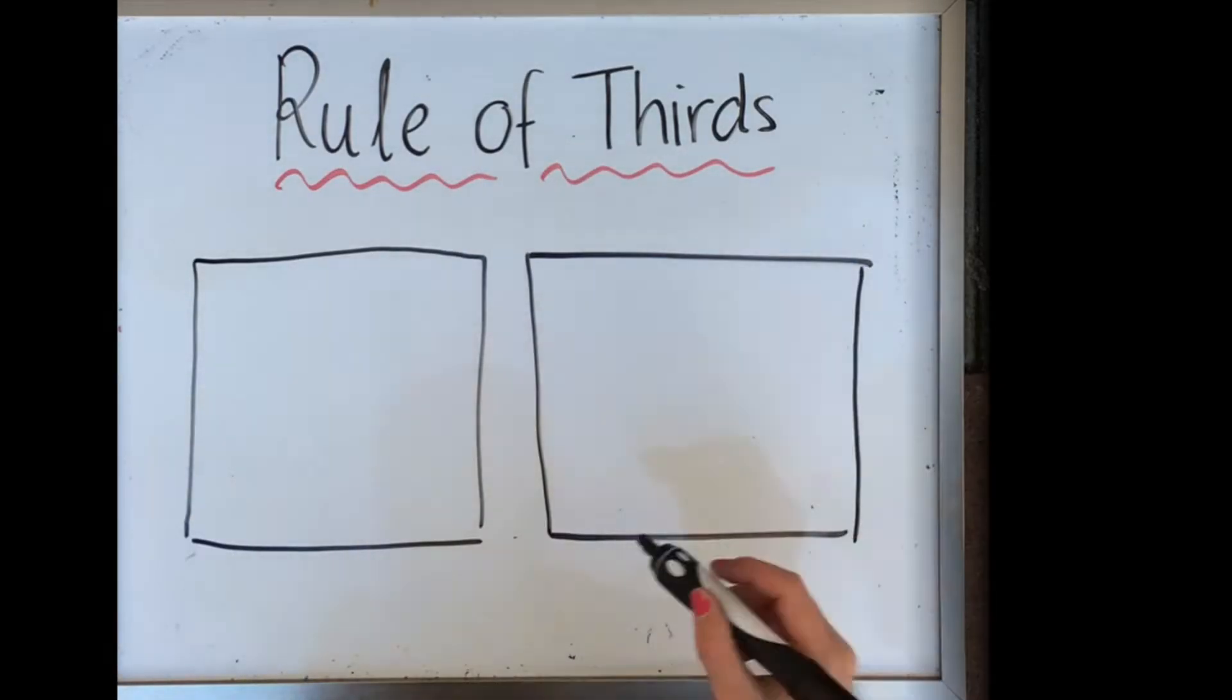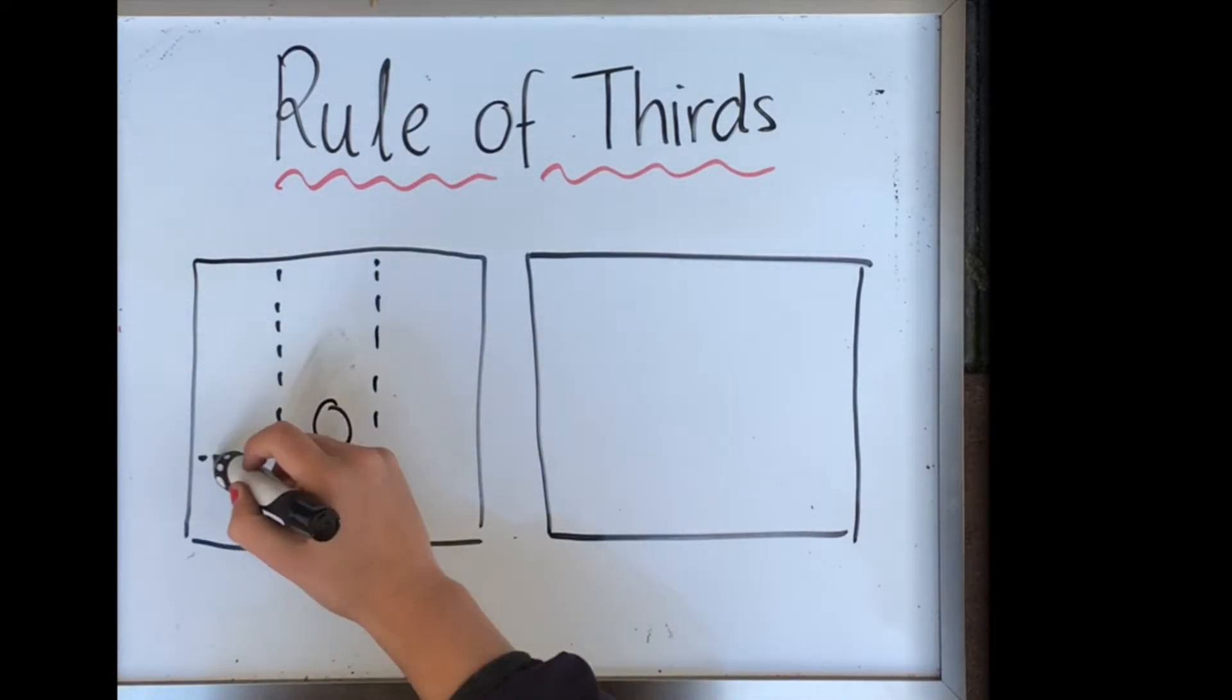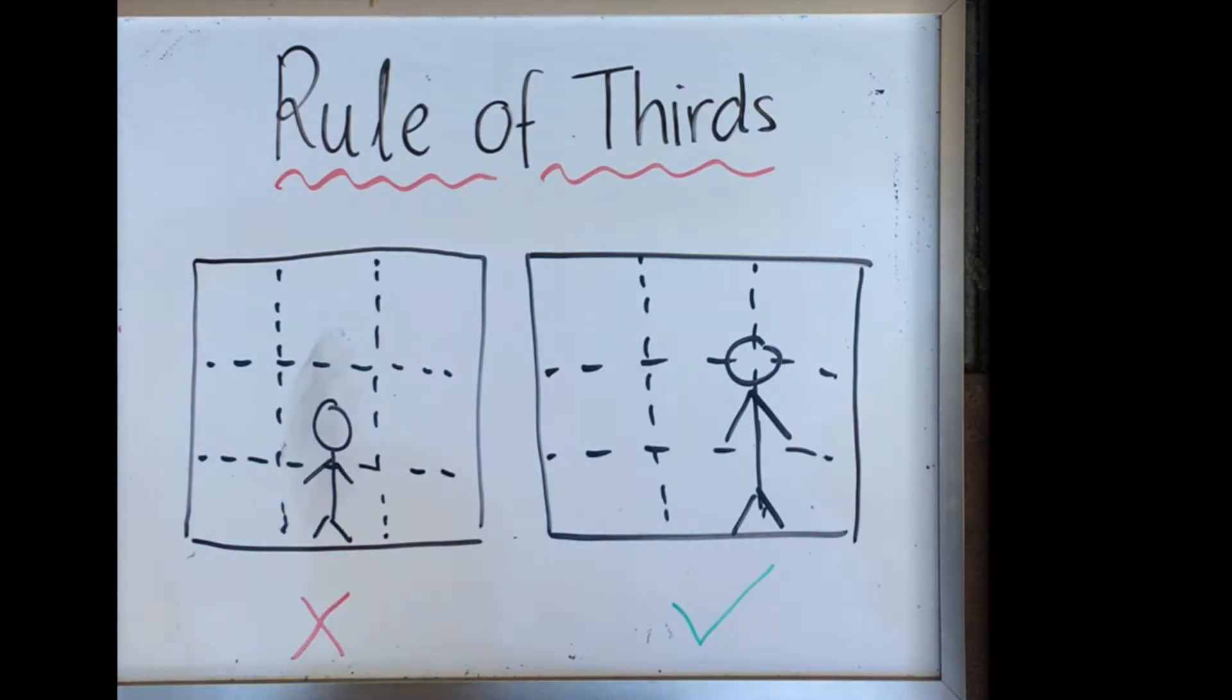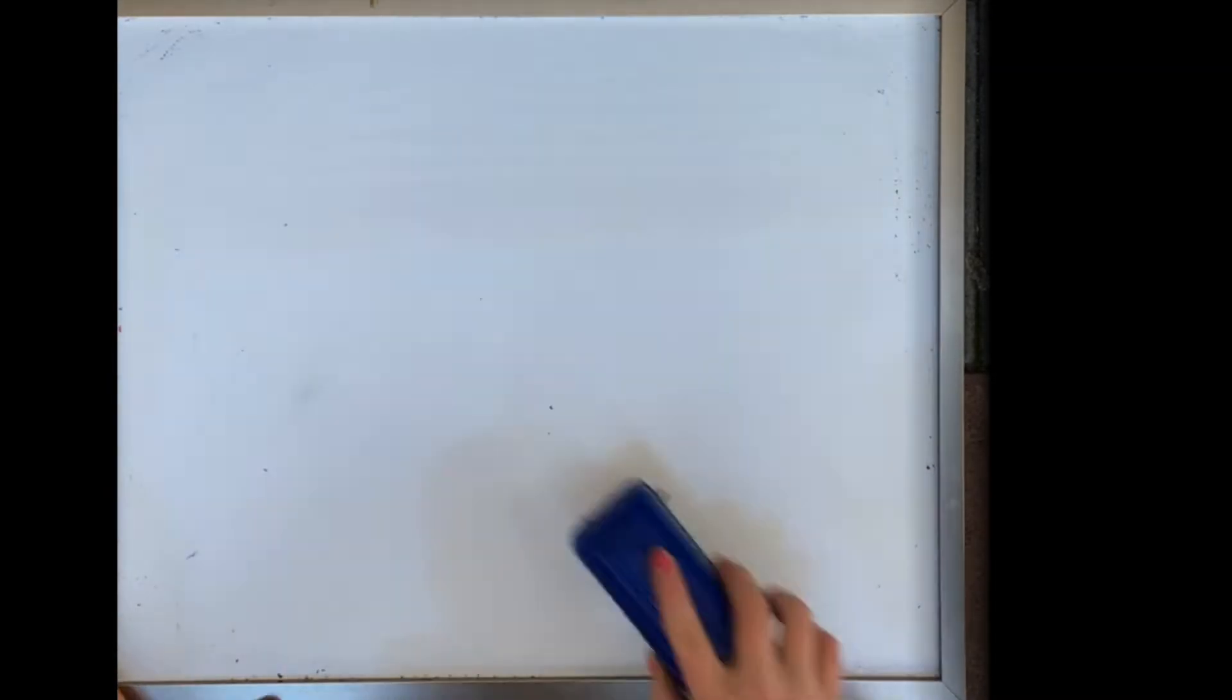Rule of thirds refers to the simple filming method, where the main focal point is placed on a third line, instead of the centre of the frame. The rule of third grid has three horizontal and three vertical lines, cutting the frame into nine equal squares.